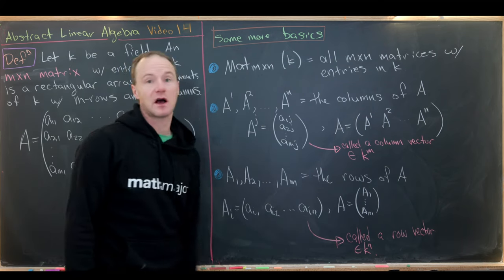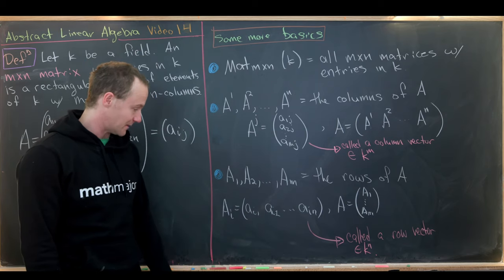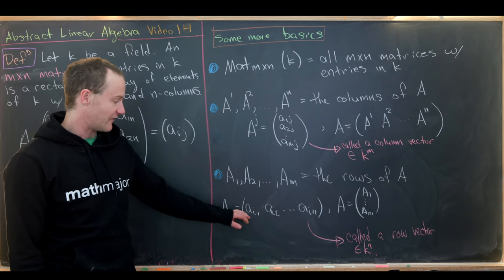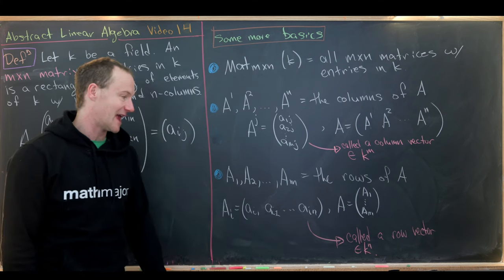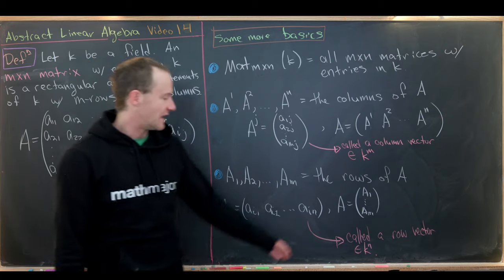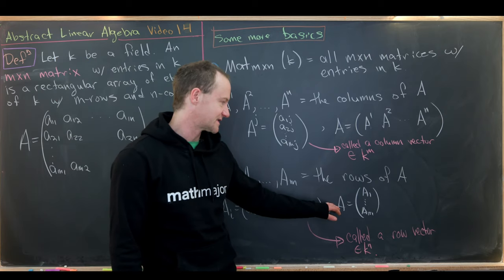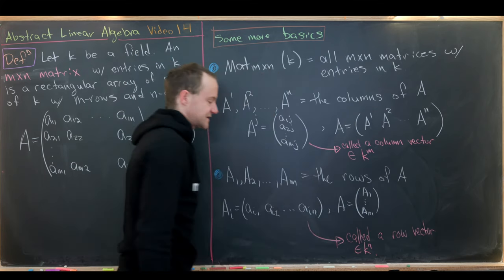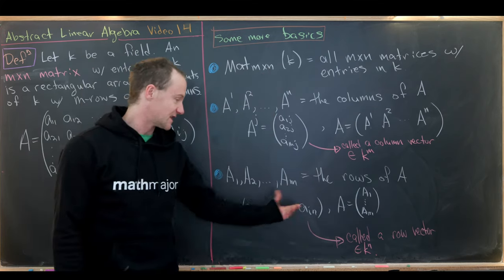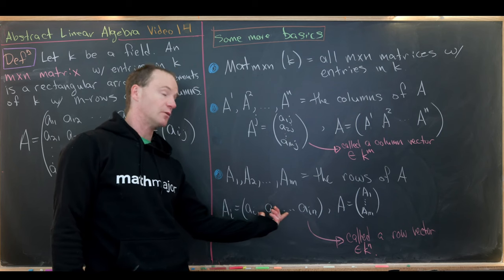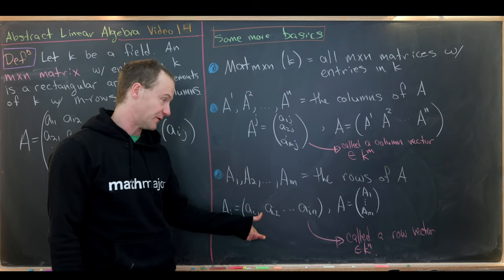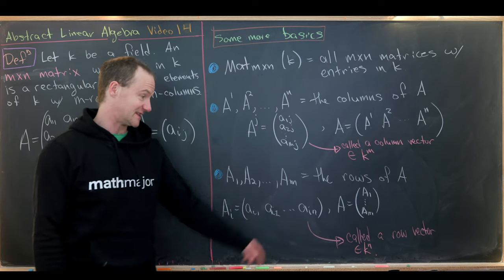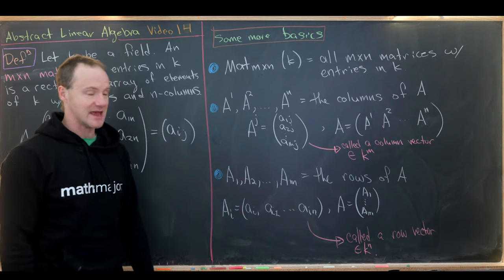There's another way to index the rows of a matrix, and we'll use subscripts for that instead of superscripts. So A1, A2, up to AM will be the rows of A. For an arbitrary row AI, we have AI1, AI2, all the way up to AIN. That allows us to write our matrix as a column of rows — sometimes called a row vector, which is in K^N because there are N entries.